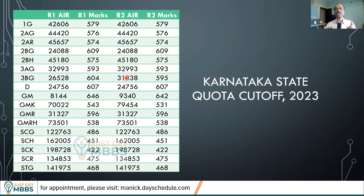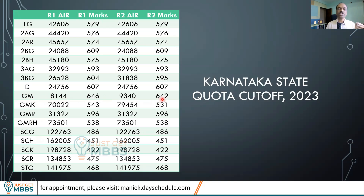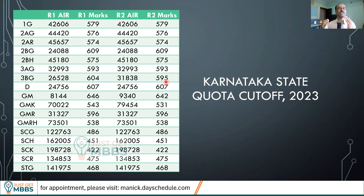For Karnataka state quota cutoffs, there are many sub-categories. Karnataka students should take a screenshot and review them carefully. For general merit (no reservation within Karnataka), the cutoff is extremely high — 642 to 646 NEET marks, and you need to be in the top 10,000 AIR. SC and ST category cutoffs are lower. All seats were filled by round 2 in 2023, with no vacancies in round 3.